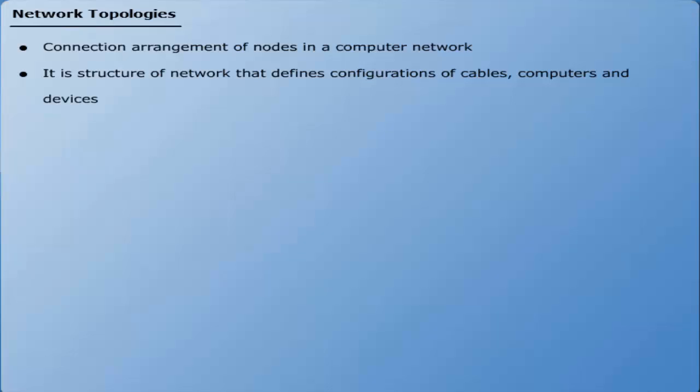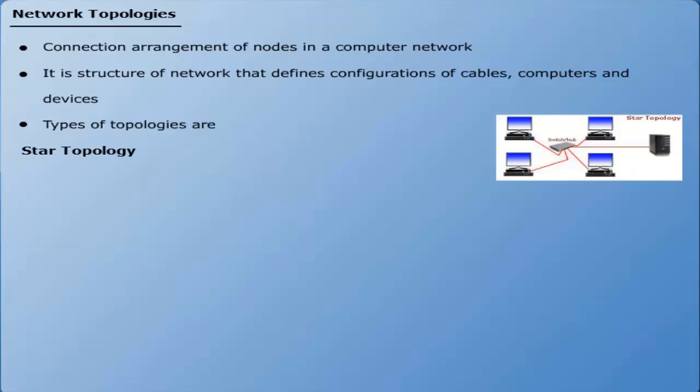The major types of network topologies include star, ring, bus, and hybrid topologies. Star topology is the most general type of network arrangement that is used in offices and homes.